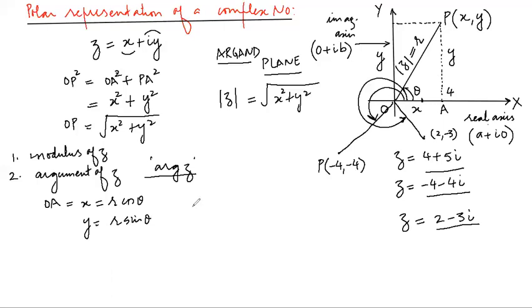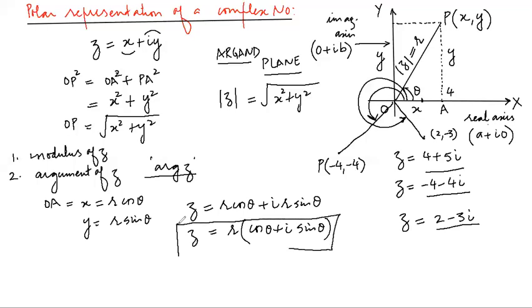Now I can always represent my complex number as instead of x, I write r cos θ + ir sin θ. I could always take r as common. This is cos θ + i sin θ. z = r(cos θ + i sin θ). This is the polar representation of a complex number.